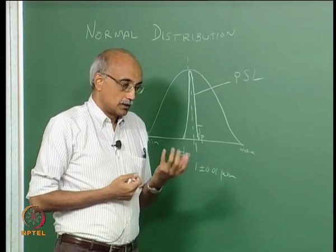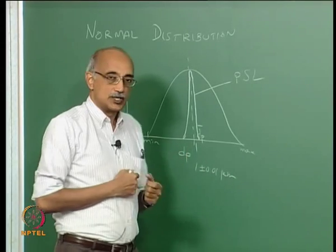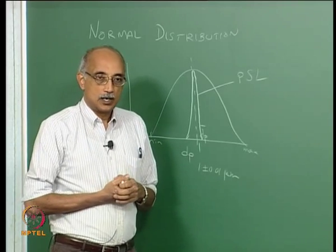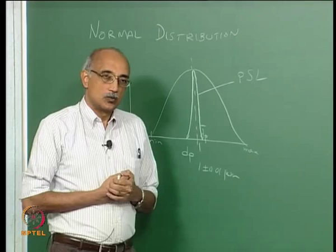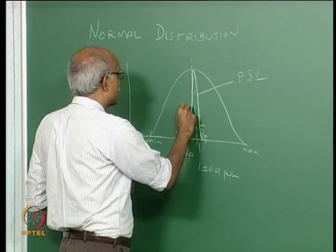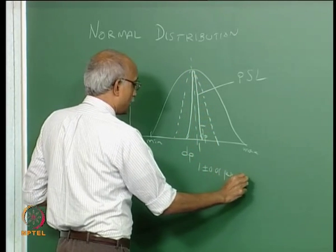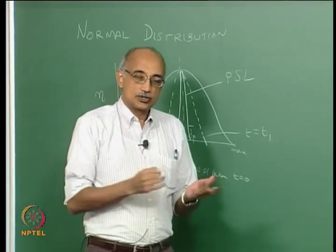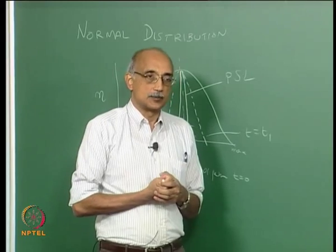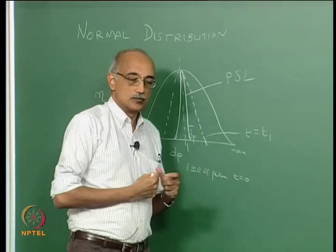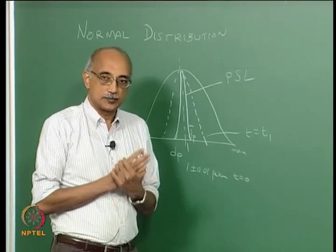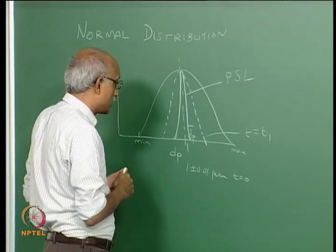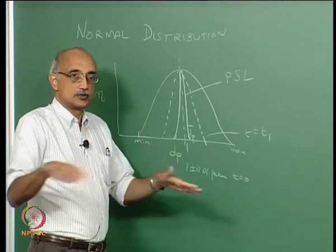If you take a vial or beaker containing these calibration standards and let it sit on the shelf for some period of time, the population will show signs of broadening after a month of shelf storage. At time zero you have a tight distribution, but at time t1 the distribution has broadened. Broadening of the distribution happens because of additive and subtractive effects — you take an initially mono-dispersed population, allow addition and subtraction phenomena to occur, and you start seeing a broadening of the spread. Over a period of months, the distribution will keep getting wider and wider.